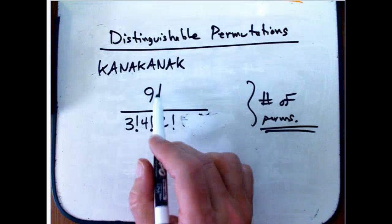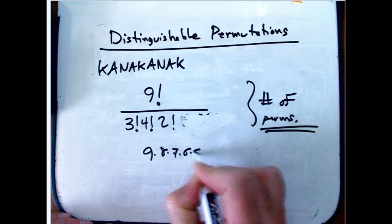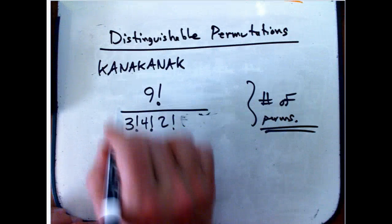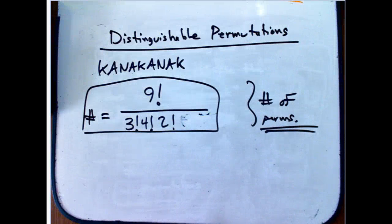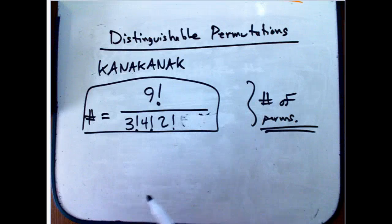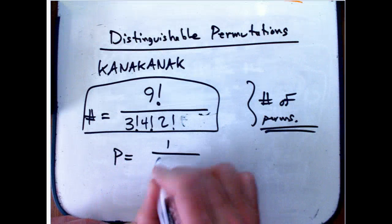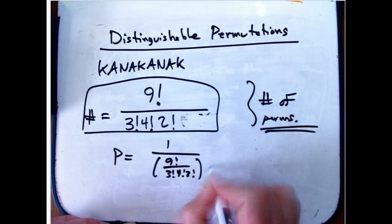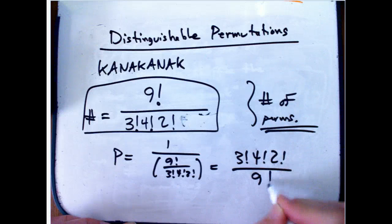Alright. Okay, so let's see. Nine factorial. So let's just get a number. Well, actually, no. Let's first look at their probability. So the probability, this is the number of distinguishable permutations. So that's my sample space. And then I was just looking at one particular distinguished element of that, the original ordering. And so the probability is one over that guy, which just flips it. Three factorial times four factorial times two factorial over nine factorial.